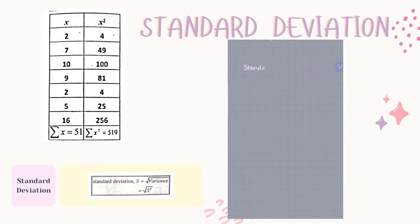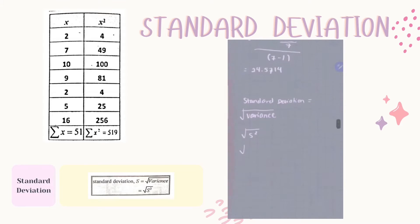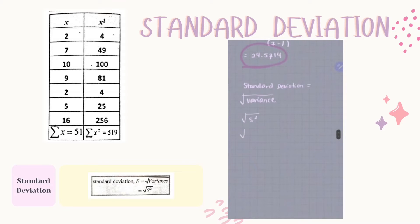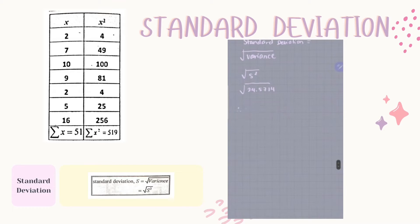For the next question, we need to find the standard deviation. The formula for standard deviation is the square root of the variance, which is the square root of S squared. Since S squared is 24.5714 from the previous question, using the calculator we get S equal to 4.957.